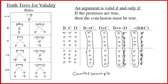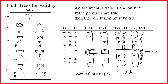Does such a row exist? Yes it does. Here on the fifth row we find a counterexample — you should circle it. If you find a counterexample, that means the argument is invalid. If there is no counterexample, the argument is valid.